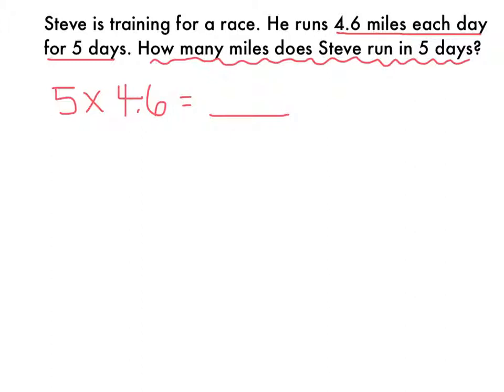So this problem is asking me to find five groups of 4 and 6 tenths miles. Again, my strategy is going to be to multiply as if these are whole numbers. So for now, I'm going to ignore the decimal point, and I'm going to multiply 46 times 5. I'm going to use the algorithm. 6 times 5 is 30. 4 times 5 is 20, plus 3 is 23.